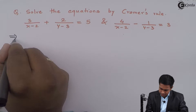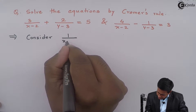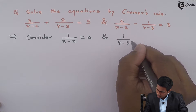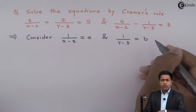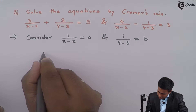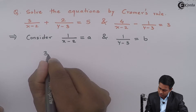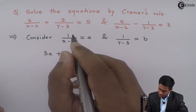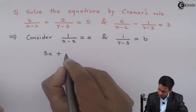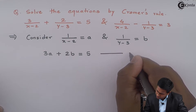For that, we will consider 1 upon x minus 2 as A, and 1 upon y minus 3 as B. Because of this substitution, equation number 1 will become: 3 into 1 upon (x minus 2) is A, so that becomes 3A, plus 2 into 1 upon (y minus 3) is B, so that becomes 2B, equal to 5. Let us call this equation number 1.